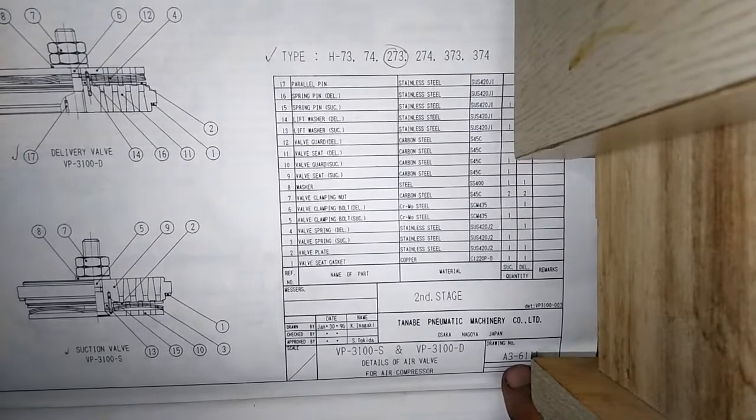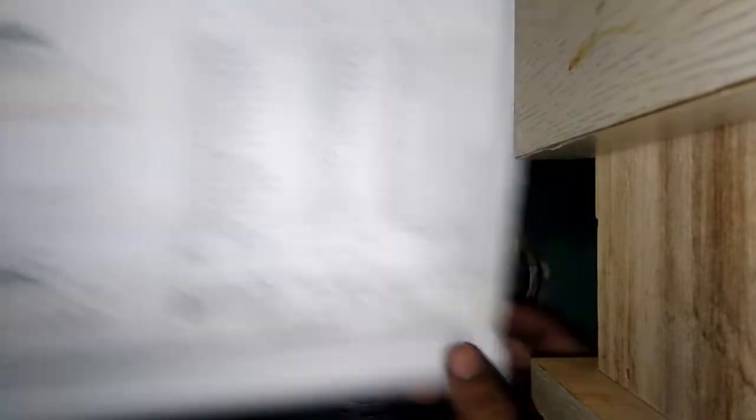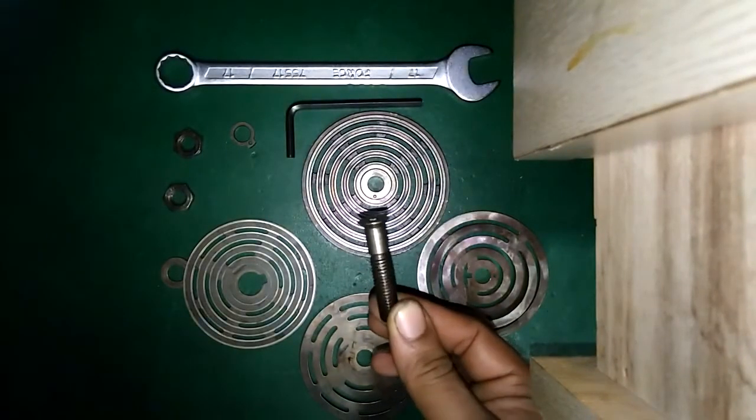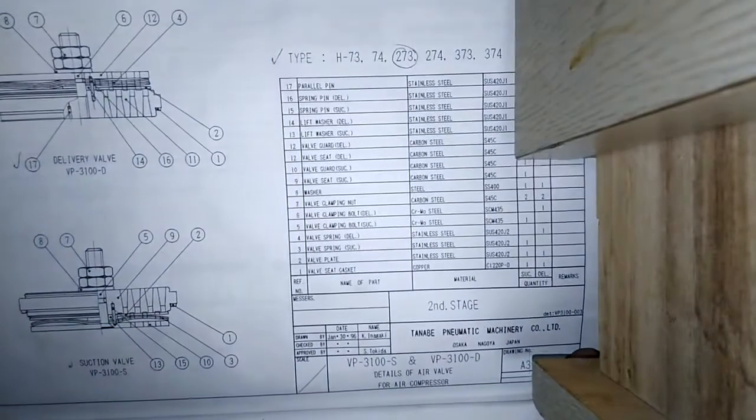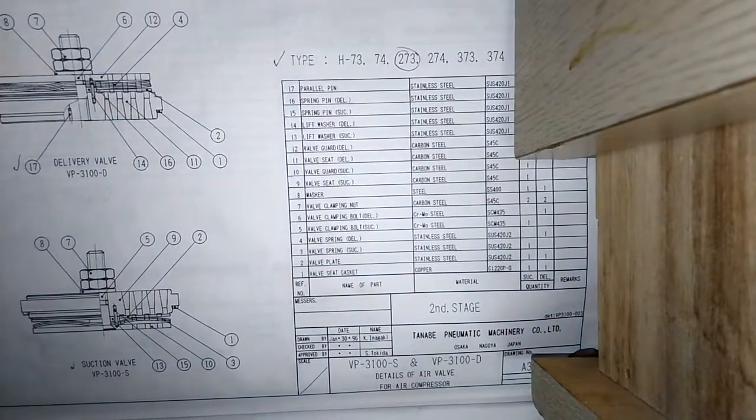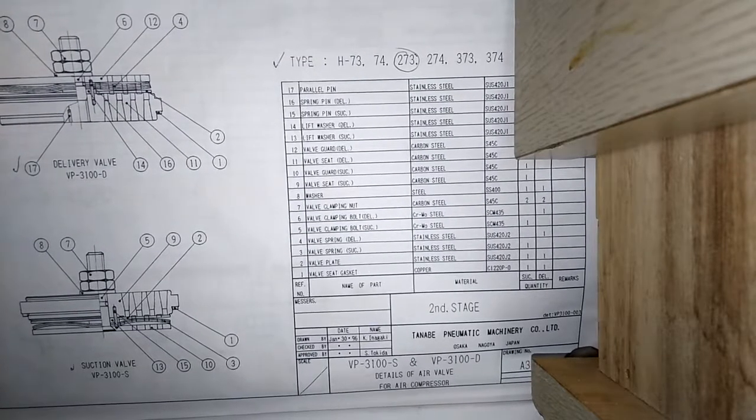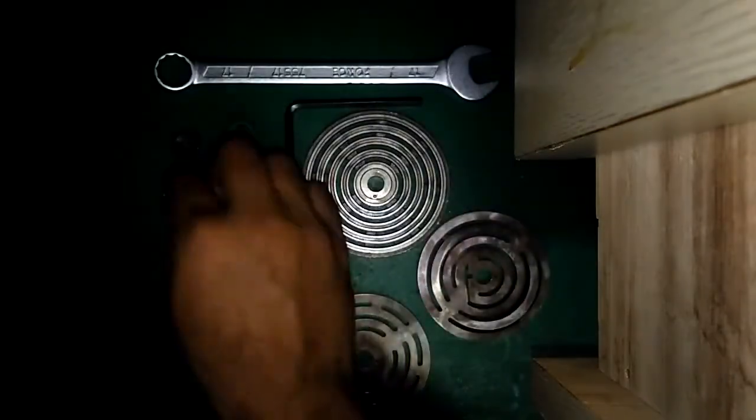Number five, wall clamping bolt section. This is the wall clamping bolt section. Number six, wall clamping bolt delivery will be in the delivery wall.